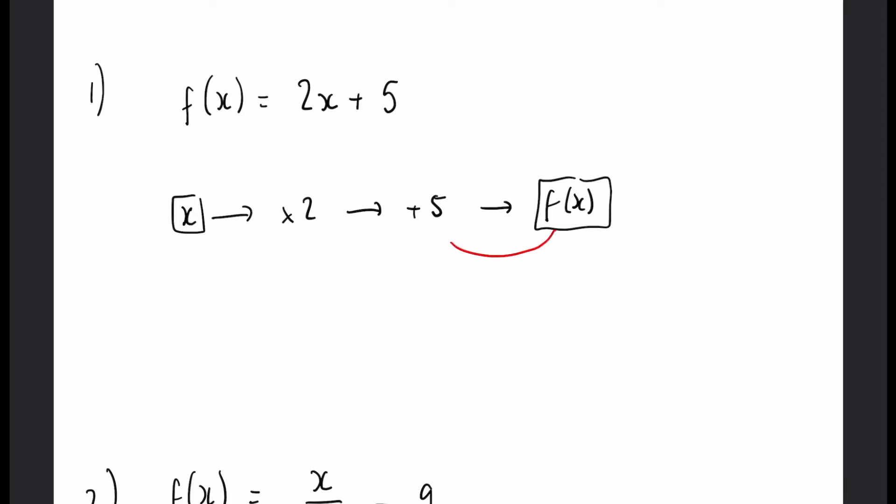So you start with your x, we have to subtract it by 5 rather than add, and then divide it by 2, and that will leave you with your f to the minus 1 of x.